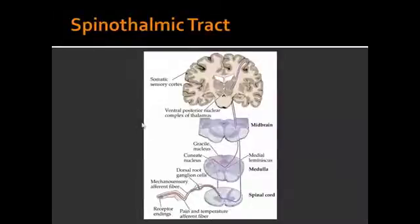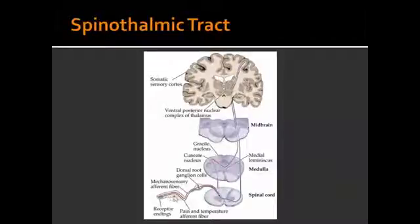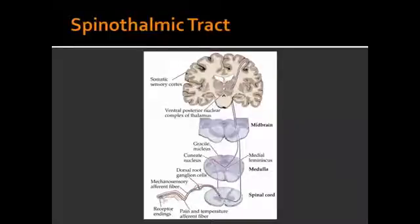To understand the spinothalamic tract, we're going to look at this picture once again, focusing on the blue line rather than the red line, which covered the dorsal column medial-lemniscal pathway. Here we see the neurons making their way all the way up to the somatic sensory cortex. At the fingertip, there are sensory nerve endings with A-delta and C fibers. This makes its way to the dorsal root ganglion, then enters the spinal cord, having its first synapse at the ipsilateral gray matter. Everything before this synapse is the first order neuron.